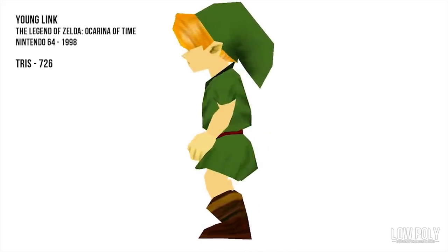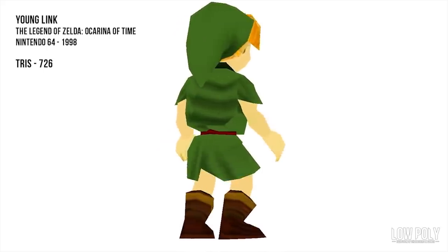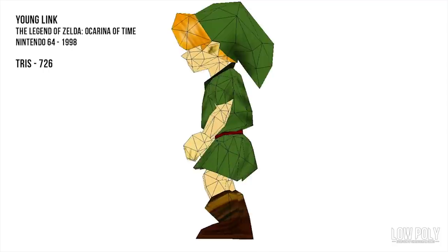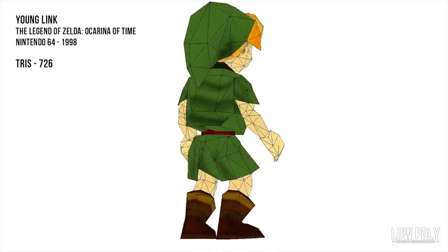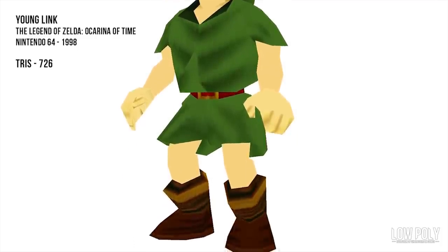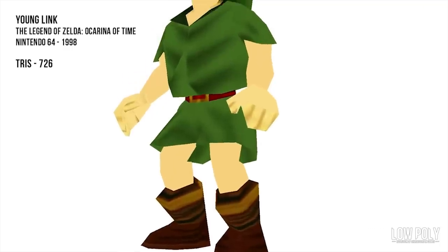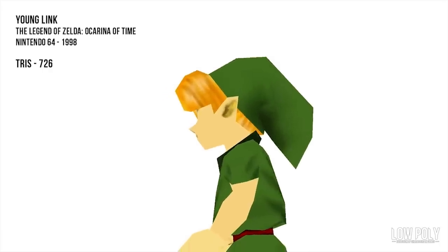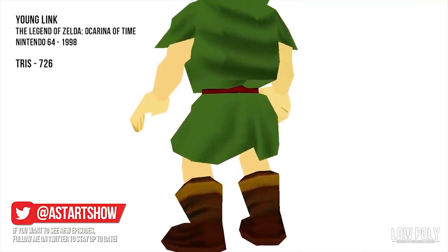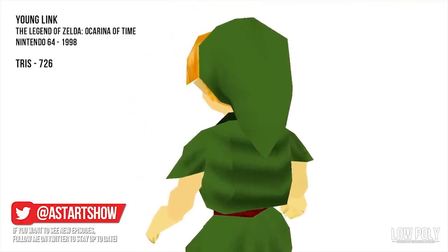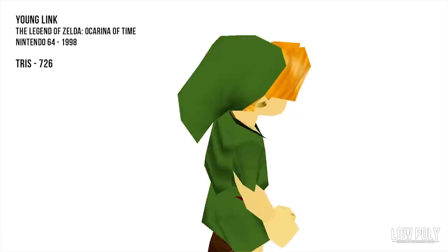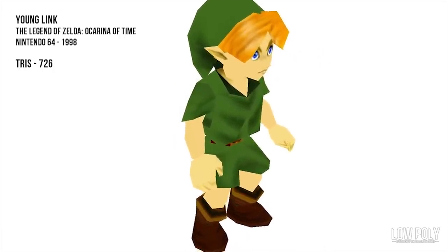We start at the very beginning on the N64 with Ocarina of Time. Link's earliest models are very basic, and this one stands at 726 tris in total. But what's going on with his modeling is actually pretty complex for the time. Young Link's character model, as aside from say Super Mario 64's Mario model, actually features real anatomy and isn't just blocky shapes. And this is only two years after Super Mario 64, so they've already come a long way. The textures do a lot of the work detail-wise, but Young Link does have a very strong silhouette modeling-wise, with the hair, the cap, and the tunic.